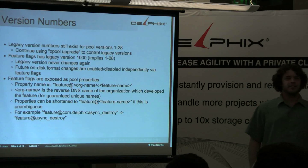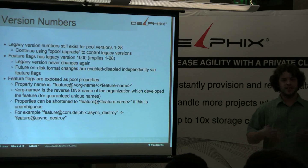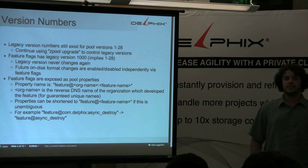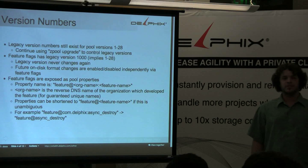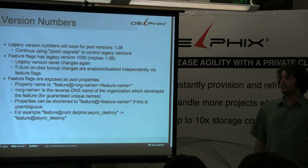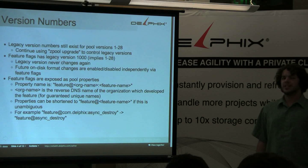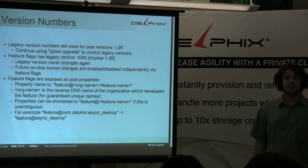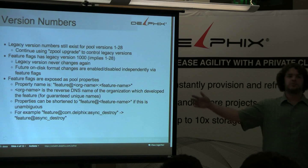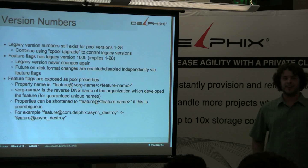I want to give an overview of what this means for a user of ZFS, independent of being a developer — what you're going to see on the command line when administering your systems. The legacy version numbers will still exist from 1 to 28 and work just the same way they always did. You can continue using zpool upgrade the same way to change between those if you need to.